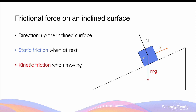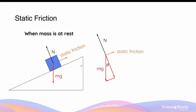There are two types of friction: static friction, when the object is at rest and not moving, and kinetic friction, when the object is moving downward. When the object is at rest — in other words, at static equilibrium — the static friction acts up the slope and balances the downward component of the weight force, that is Mg sin theta.